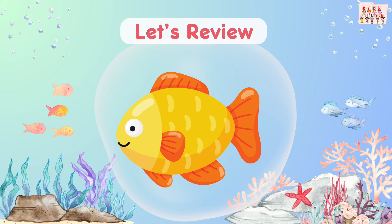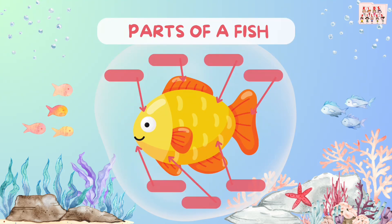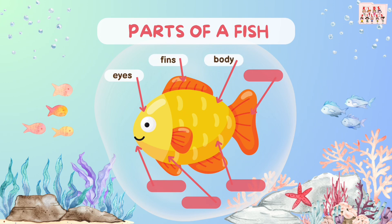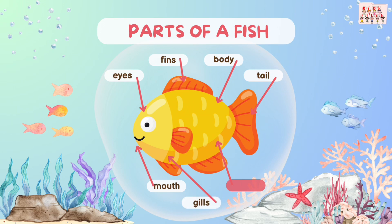Now you have learned the parts of a fish. Let's review. I say the words and you repeat after me. Eyes. Fins. Body. Tail. Mouth. Gills. Scales.